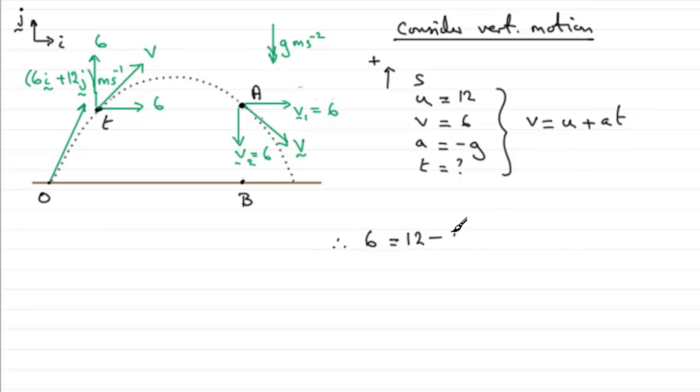And if we rearrange this, let's say we add 9.8t to both sides, take six from both sides, so you get 9.8t equals 6. And then to get t, just divide 6 by 9.8.